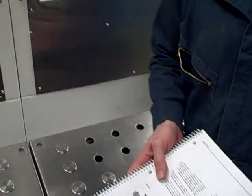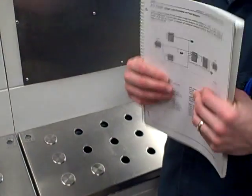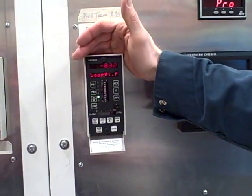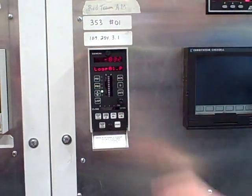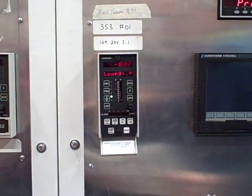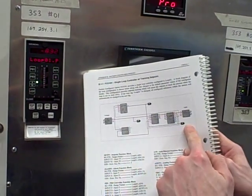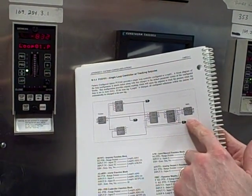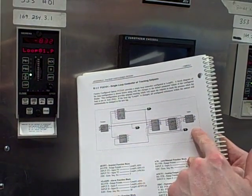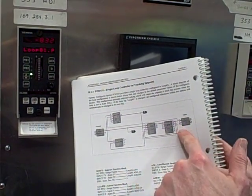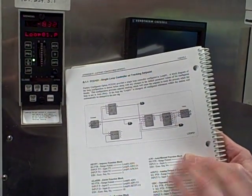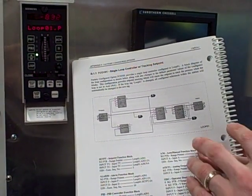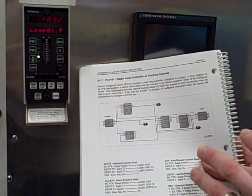What we're going to do here is set double or dual analog outputs on a Siemens Model 353 loop controller. Presently, this is set up for its factory configured option 101, which shows a single loop control, very basic. We want to add a second analog output block in this function block program so that we will have two active analog outputs, both of them 4 to 20 milliamps, both driving the same signals to two different valves, which we will then split range.